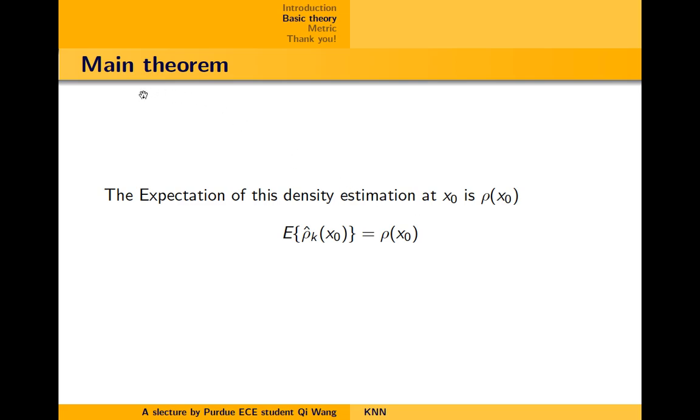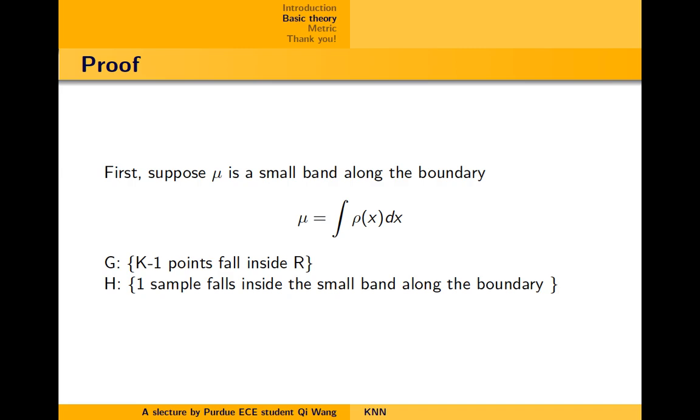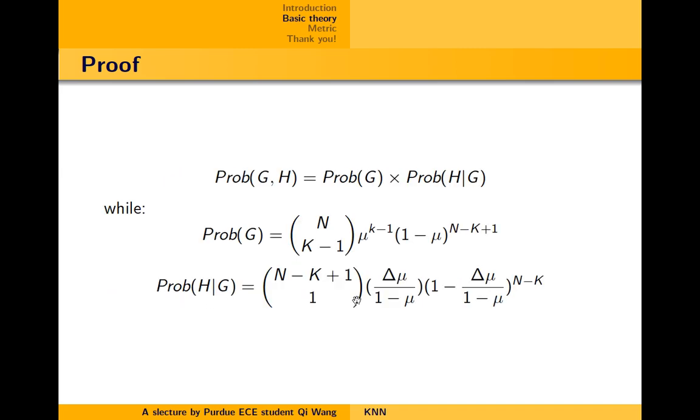Okay, then we come to our main theorem of this lecture. The expectation of this density estimation at x₀ is the true density of x₀. So before we start, we have to make some assumptions. Suppose that μ is a small band along the boundary, and μ can be calculated like this. Also, let G be the event that k-1 samples fall inside r, and let H be the event that one sample falls inside the small band around the boundary.